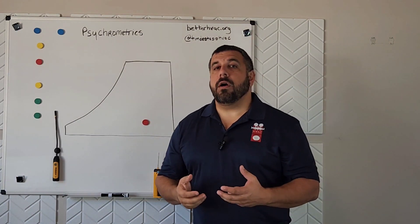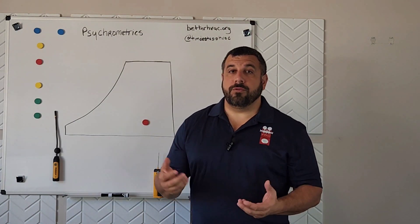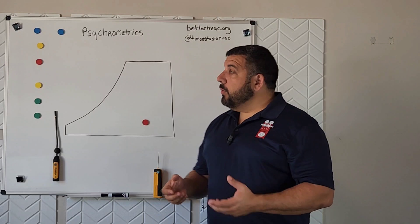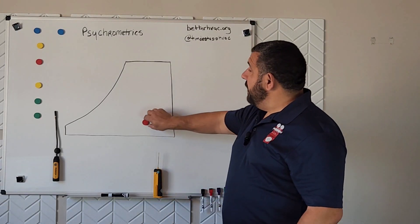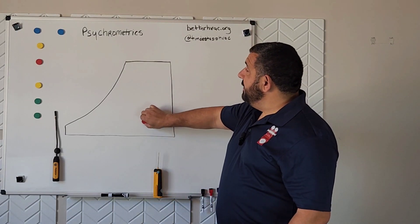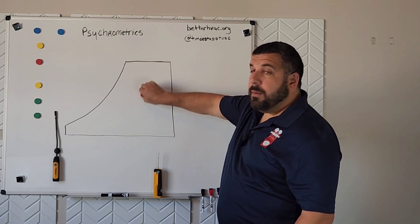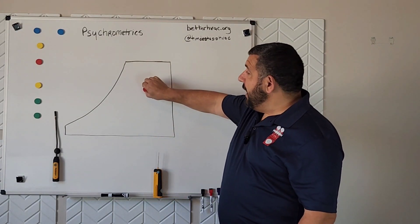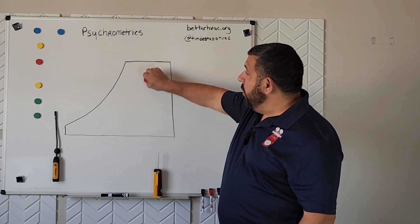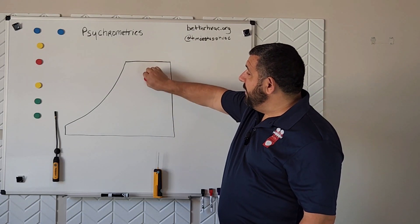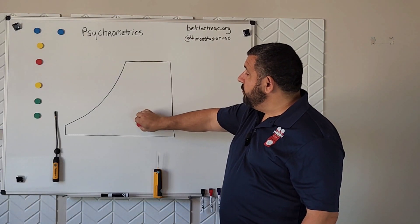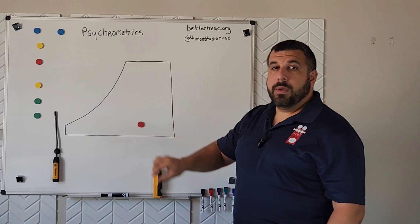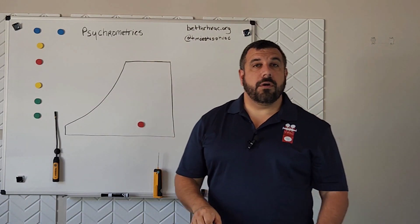The next term we're going to talk about is moisture. Moisture on the psychrometric chart is going up and down. So if we're adding moisture, we go up in the chart. If we take away moisture, we go down in the chart.